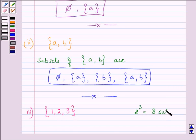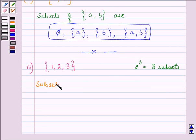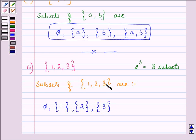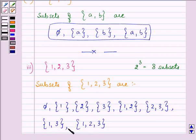So the subsets of this set are φ, {1} taken separately, {2}, {3}. That means we will first write all the elements separately. Then we will start grouping them: {1, 2}, then {2, 3}, then {1, 3}. And at last all the three elements together. So these become the eight subsets of the given set.